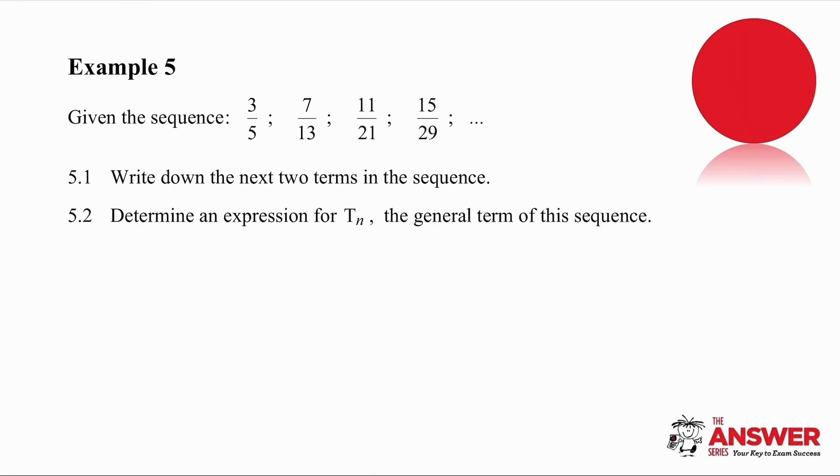Okay, so if you continue the row at the top, you'll notice that each term increases by 4. So we are simply going to go to 19 and then to 23. If we look at the denominators, we now have gaps at the bottom of 8 each time. So if we continue that, if we add 8 to 29, we're going to get 37, and if we add 8 to 37, we are going to get 45. So we have our next two terms.